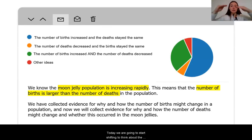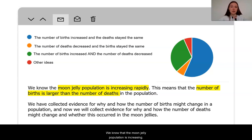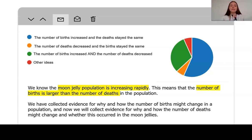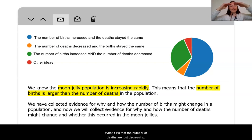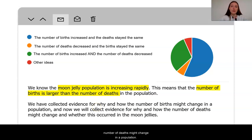Today we are going to start shifting to think about the other side of the ratio: our death rates. We know that the moon jelly population is increasing, meaning that the number of births is outweighing the number of deaths. Our question is why is this occurring? We've looked at how the number of births might increase, but what if it's that the number of deaths are just decreasing? Today we are going to collect evidence for why and how the number of deaths might change in a population.